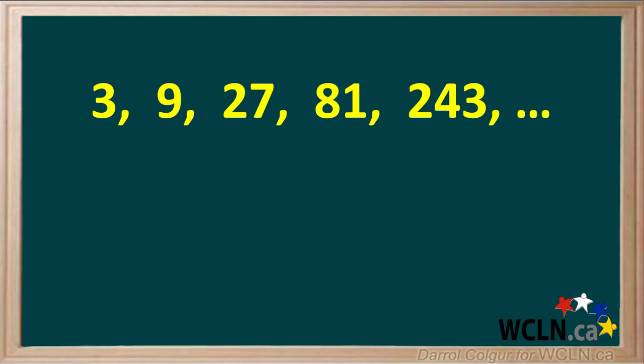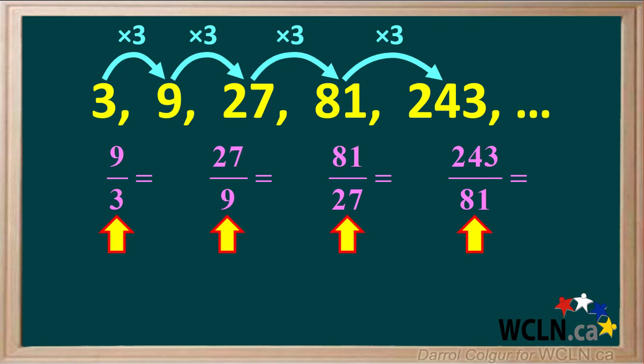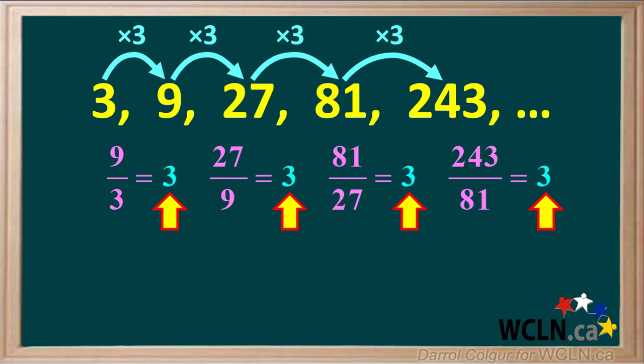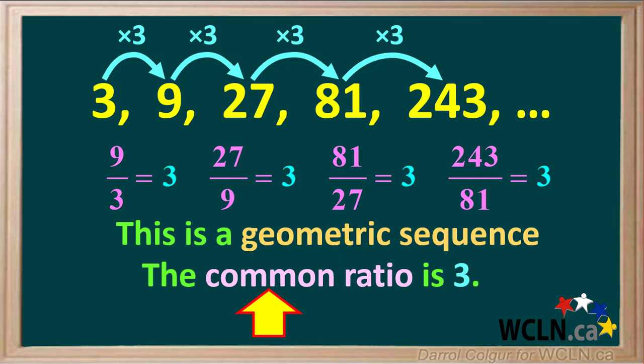Here's another sequence. You can see that to get from one term to the next term, we must multiply by 3. To check, we'll take the ratio of each term to the one preceding it: 9 over 3, 27 over 9, 81 over 27, etc. And each of these ratios is equal to 3. So we can state that this is a geometric sequence and the common ratio is 3, so r equals 3.